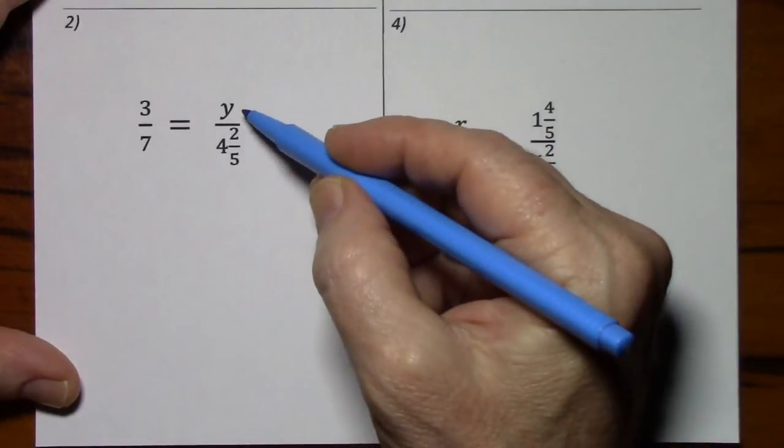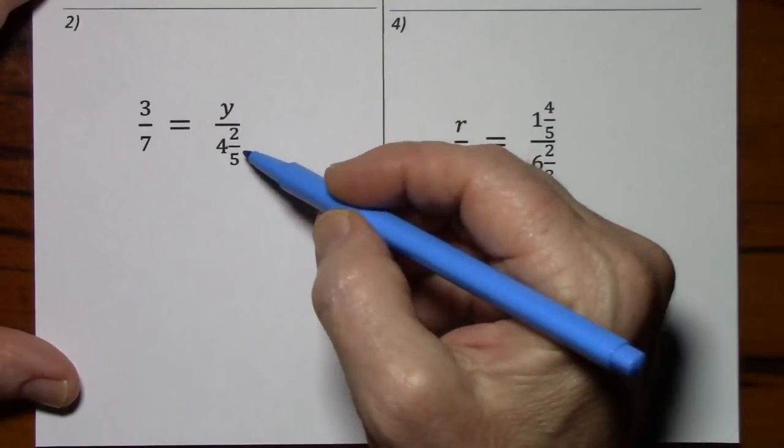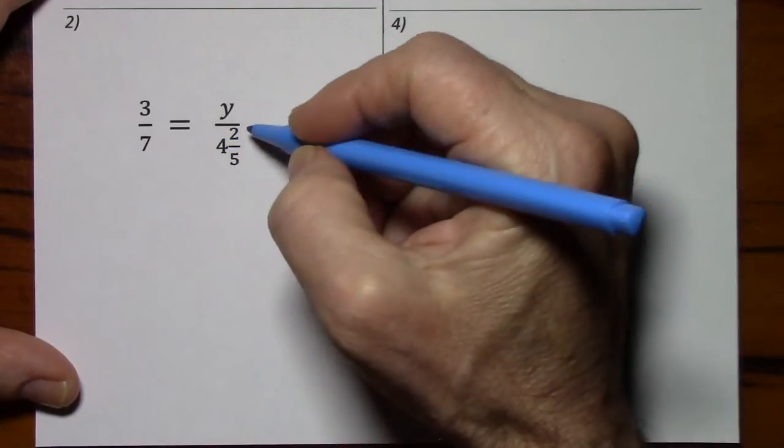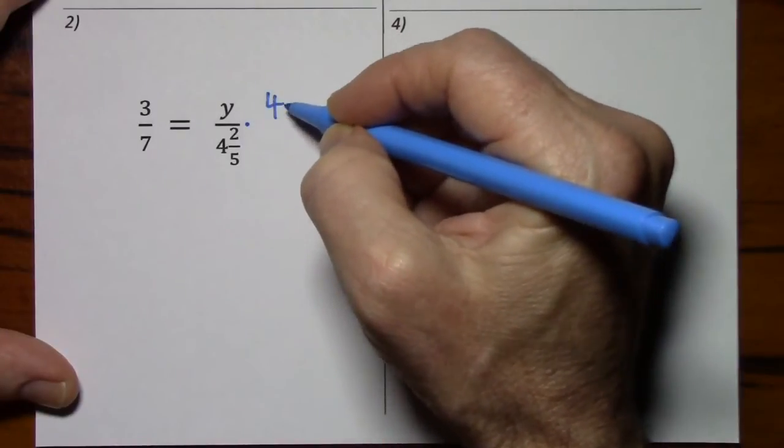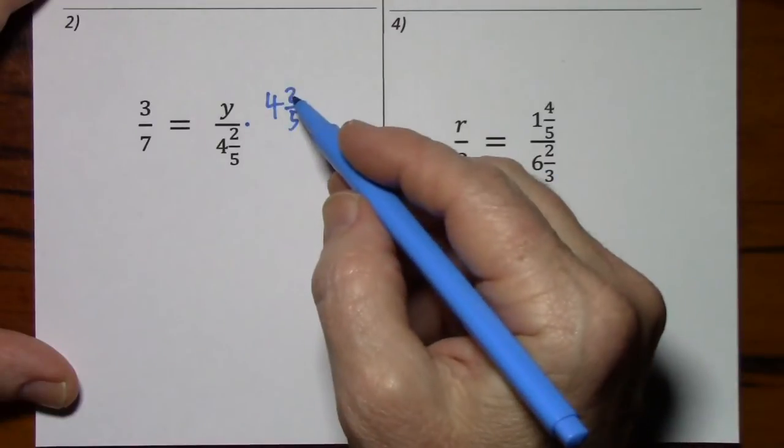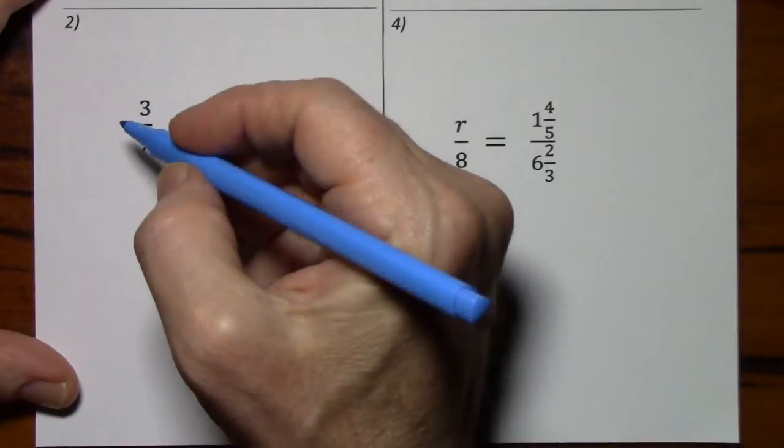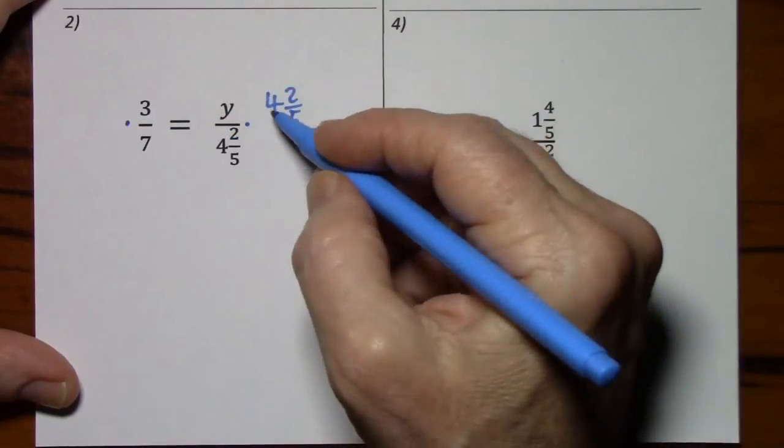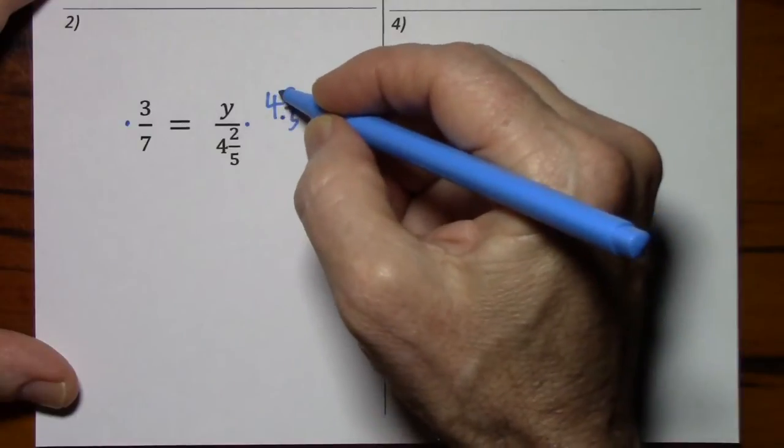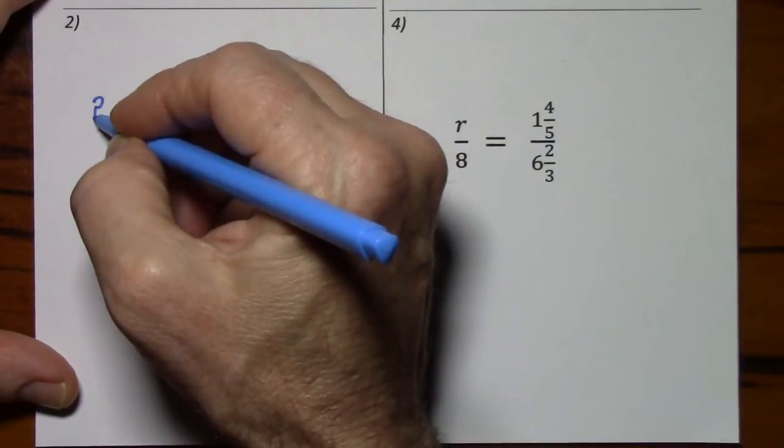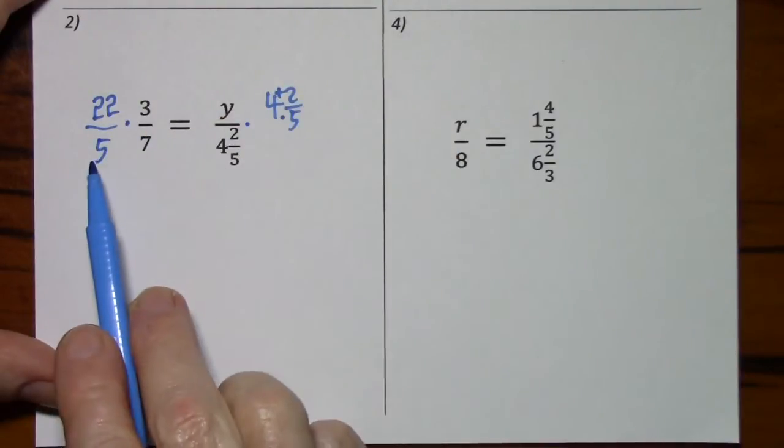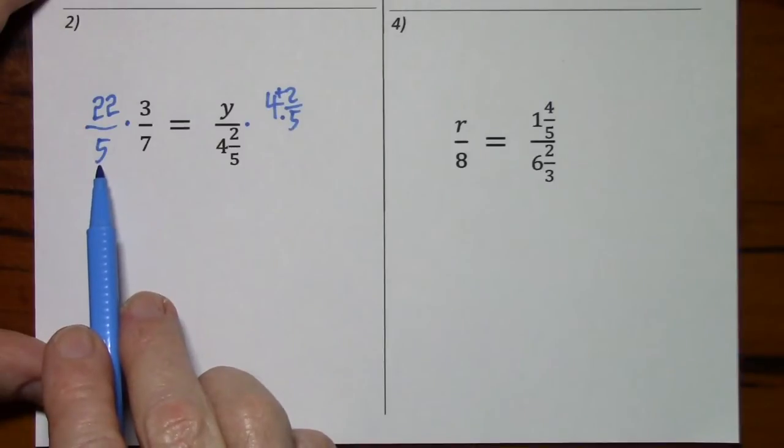Looking at this equation, the variables in the numerator, all I need to do is get rid of 4 and 2 fifths. It's held by division. So I'll multiply by 4 and 2 fifths. I left it in this form here because I know it's going to cancel. But on the other side, when I multiply by 4 and 2 fifths, I need the improper fraction. So that's 22 fifths. And again, these are the same value. I just wrote it in the form I need it over here.